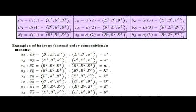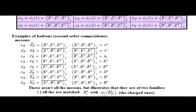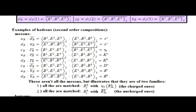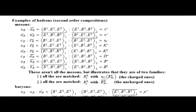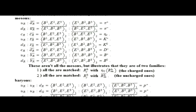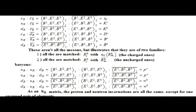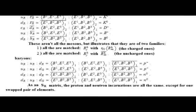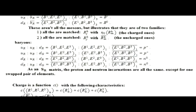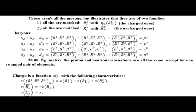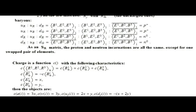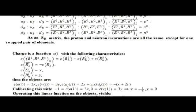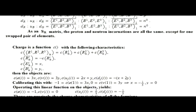Shown here are examples of hadrons, second order compositions, mesons, and baryons. The charge function acts as a linear function on any linear combination of S sub R matrix objects, independent of column generation with the characteristics as you see here. The function for mass is a little more complicated, but for the first and second order objects works out to what you see here.